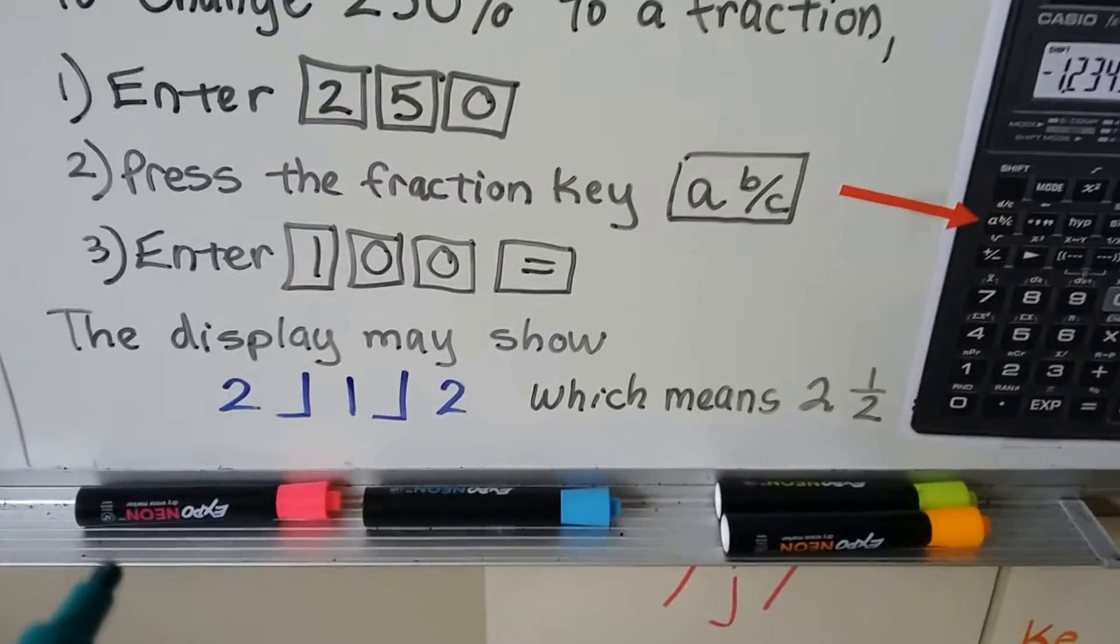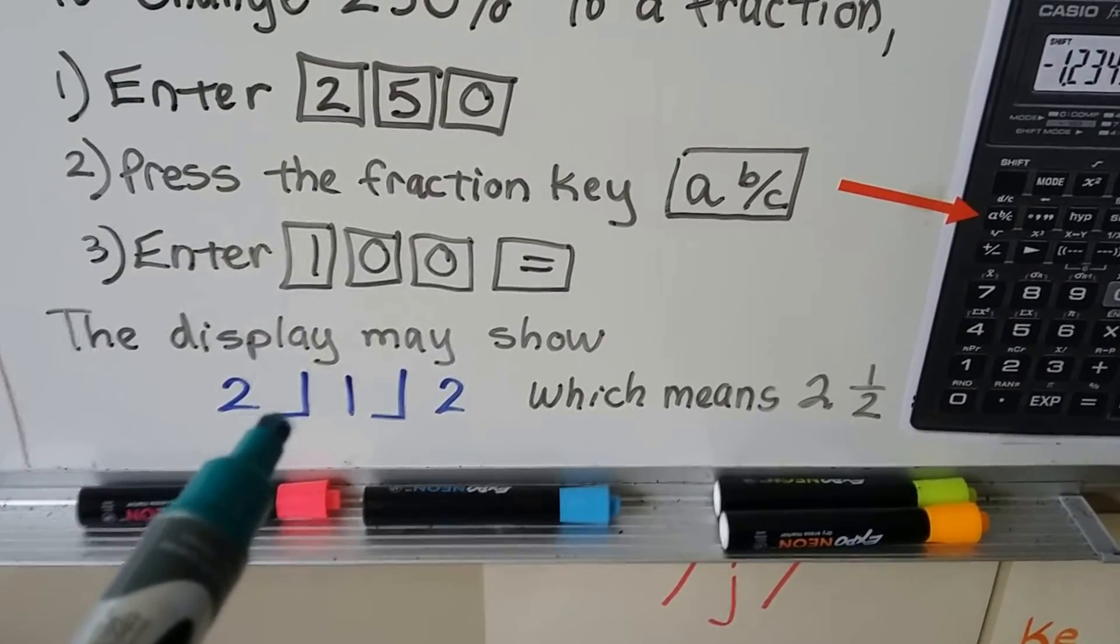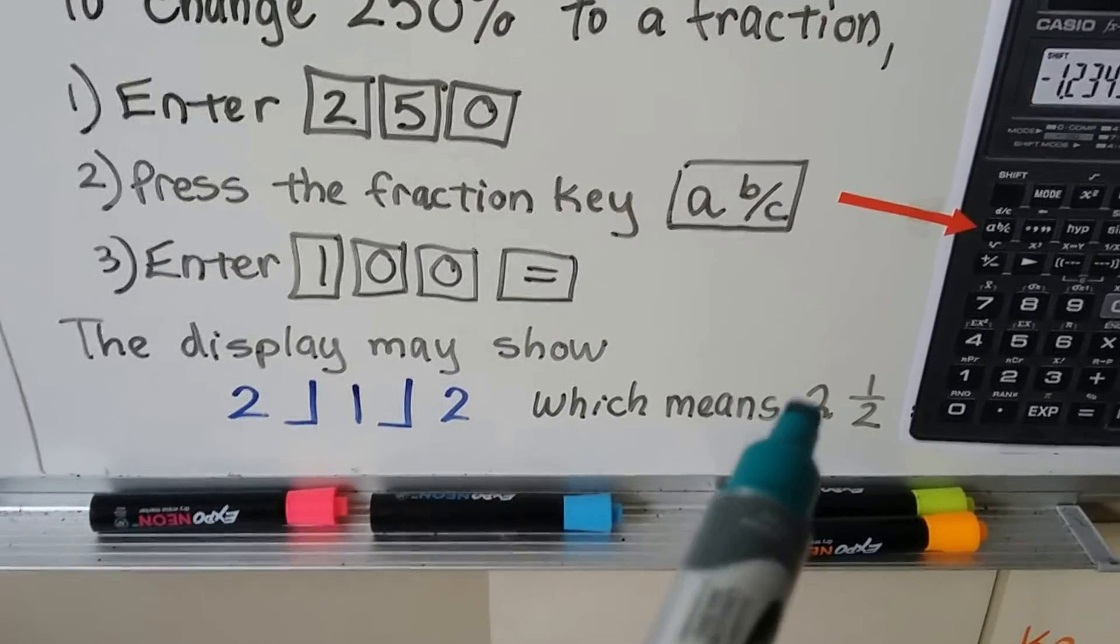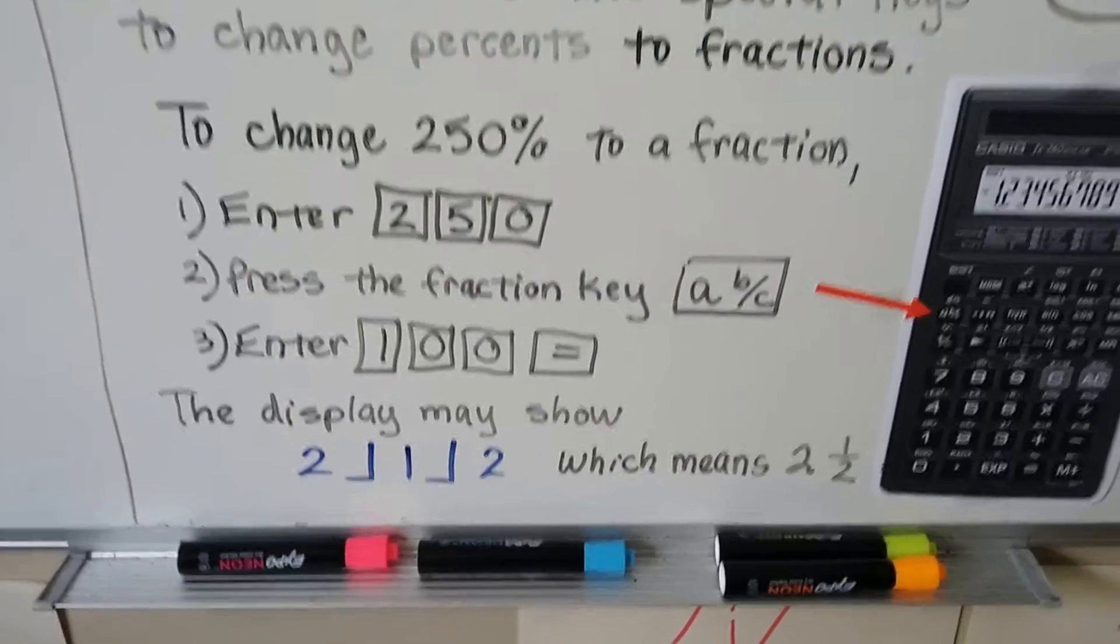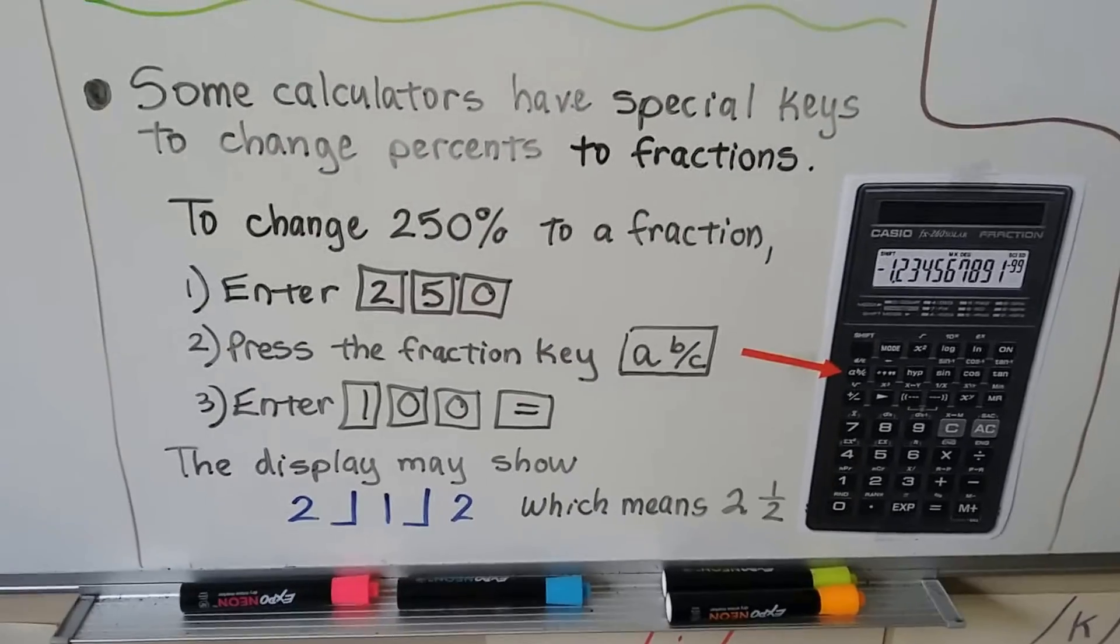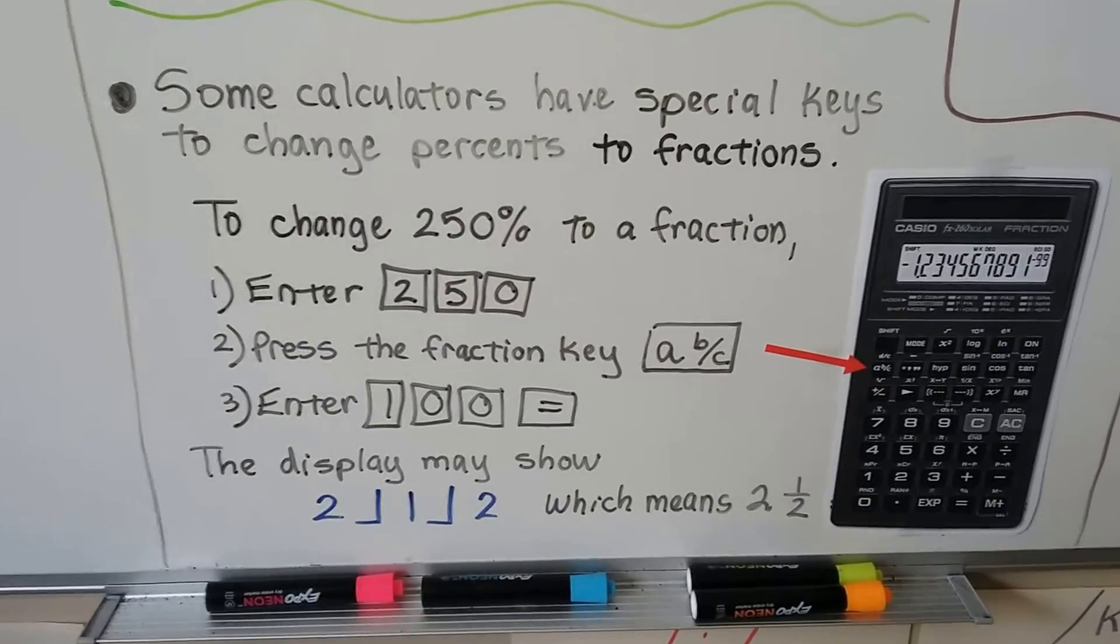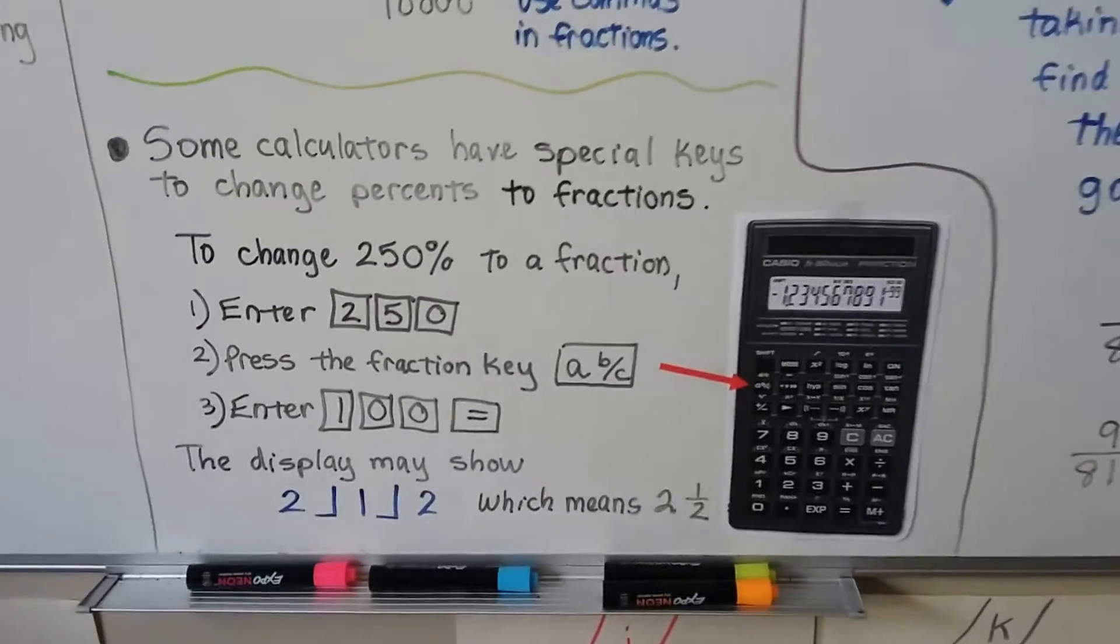Depending on the calculator, you'd have to read the instructions for each calculator, but depending on the calculator, you might see a 2 and a backwards L, and then a 1 and a backwards L, and then a 2, which means 2 and a half. So that would be on a calculator. And like I say, they're not all the same unfortunately, so it depends on the calculator you have if it's going to work out this way or not, or if it's going to have a display like that.